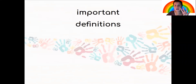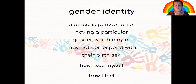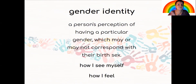Let's take a look at four important definitions when we talk about gender. First, gender identity. Gender identity is a person's perception of having a particular gender, which may or may not correspond with their birth sex. So, it basically means how I see myself, how I feel. The exterior is not important — it's about me, myself, and I with myself.